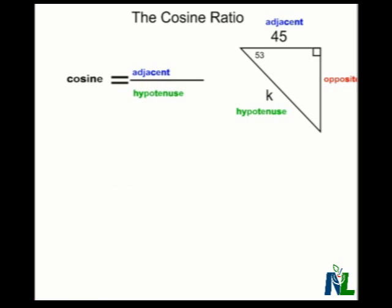Since we know the formula that cosine equals the adjacent over the hypotenuse, we can use the cosine ratio to determine the length of K. Let me start filling in what we know.